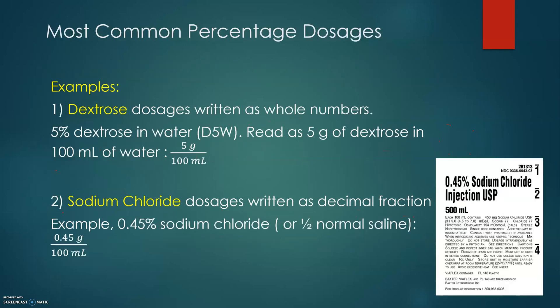The most common percentage dosages we will encounter are in IV dosages. One example is dextrose dosages, which are usually written as whole numbers. 5% dextrose in water, abbreviated D5W, is read as 5 g of dextrose in 100 mL of water, giving the ratio 5 g over 100 mL.